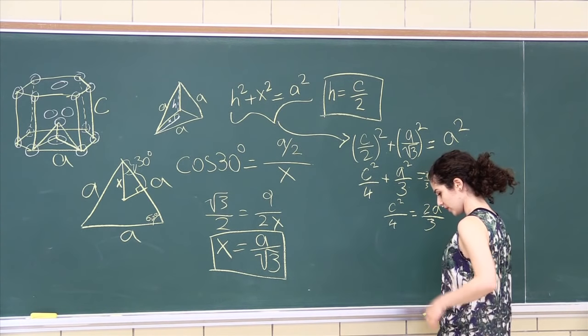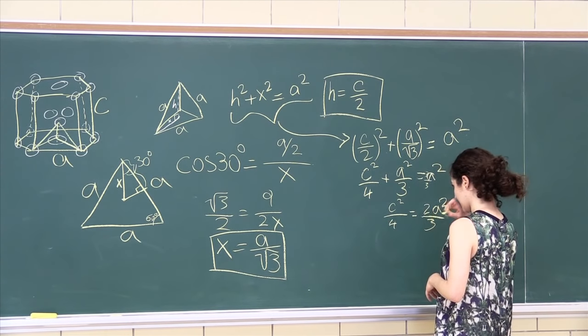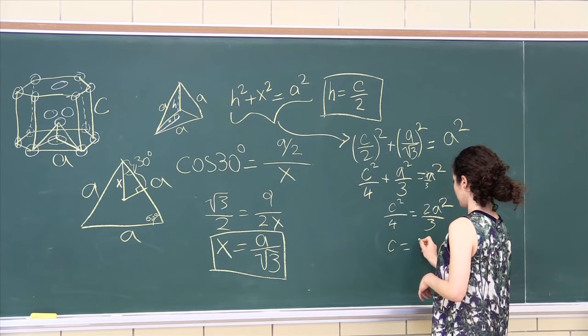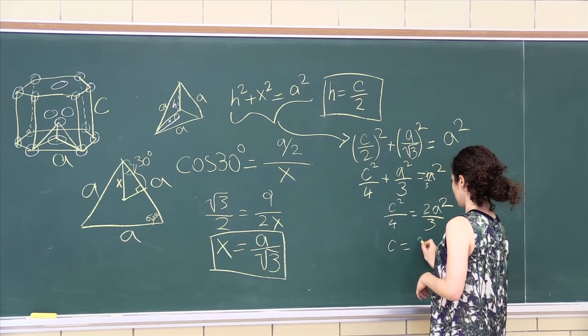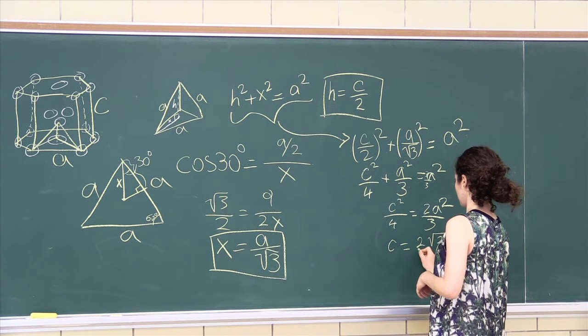so I'm gonna solve for C over here, and I'll say that C is equal to, so, 2 root 2 over root 3.